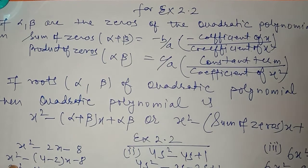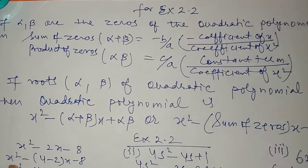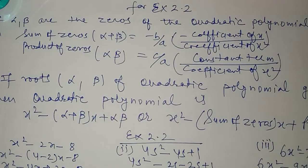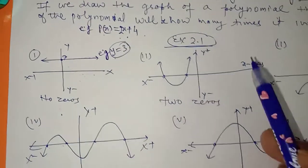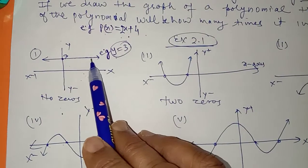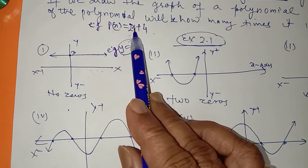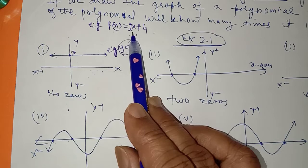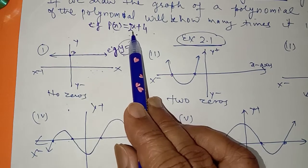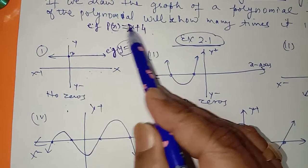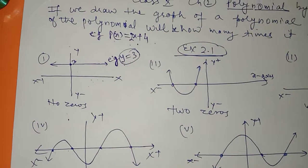As we have seen in the previous exercise graphically, a linear polynomial like 2x plus 4 has degree one — the highest power is one — so a linear polynomial has one zero.